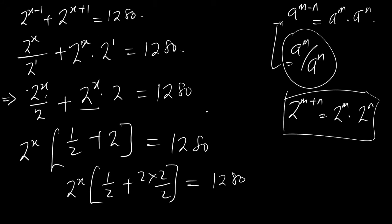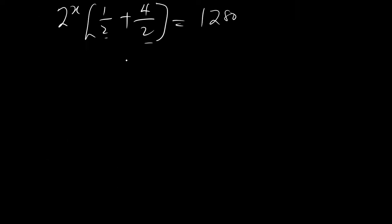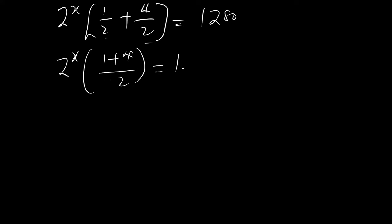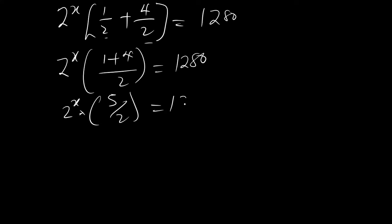The reason why we make the denominators the same is so that we can add the numerators. So now, adding the numerators, we have 2 to the power x times 1 plus 4, which is 5, divided by 2, equal to 1280. So you have 2 to the power x times 5 over 2 equal to 1280.